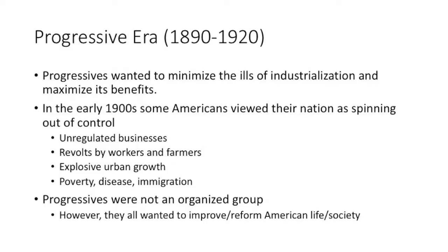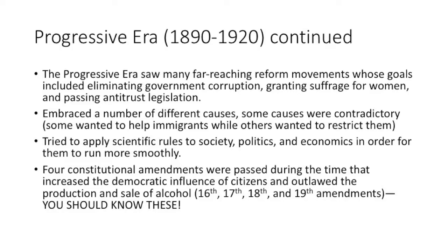The progressive era is different from the Populists because they were different people. Populists were farmers; the Progressives were mainly middle-class white people — WASPs, white Anglo-Saxon Protestants. A lot of women were involved. It wasn't an organized group, and some of the causes they fought for were actually contradictory — some wanted to increase immigration and help immigrants, others wanted to limit it.